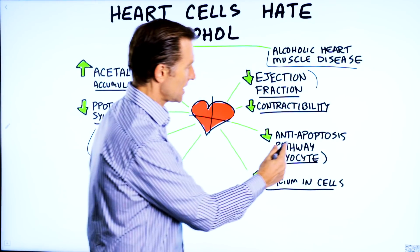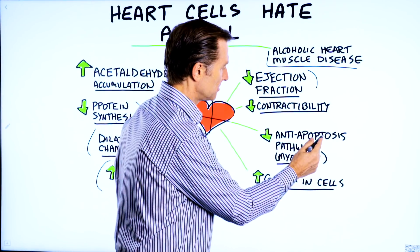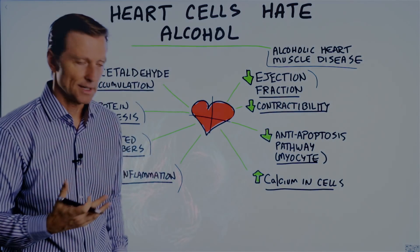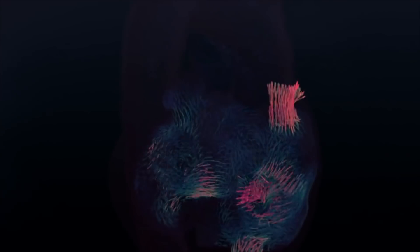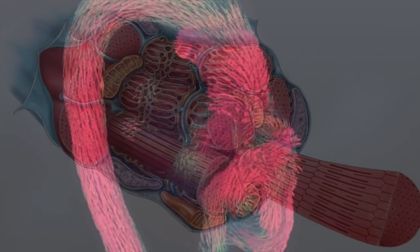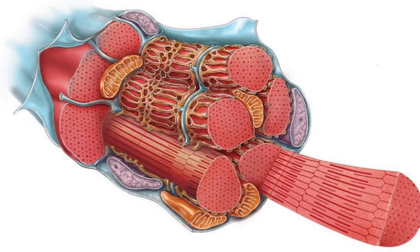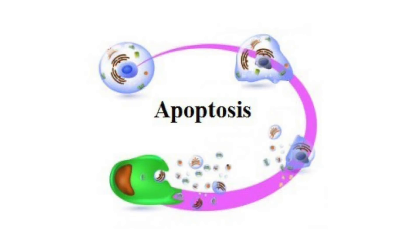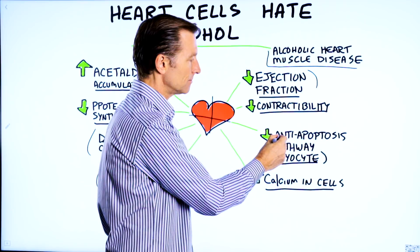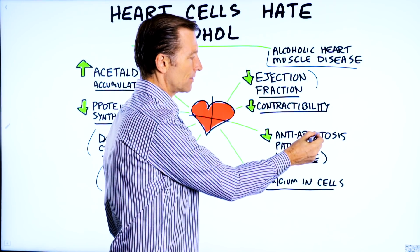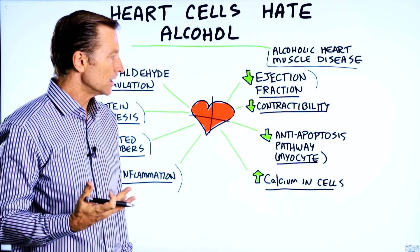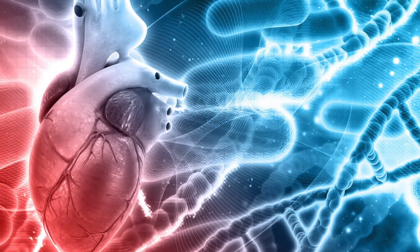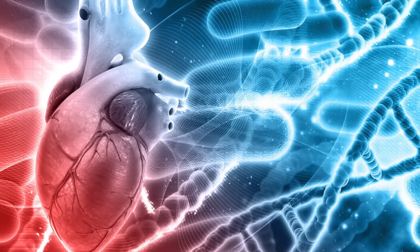We also get a decrease of anti-apoptosis pathways. There are certain pathways that are there to help the survival of the heart muscle cell, called the myocyte. Apoptosis is where the cell actually dies. So with alcohol, you are going to decrease the effect of this protective mechanism and you'll have more heart cells that die.